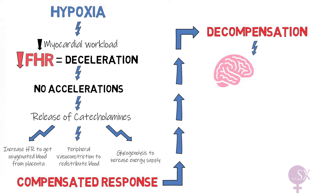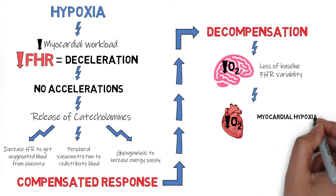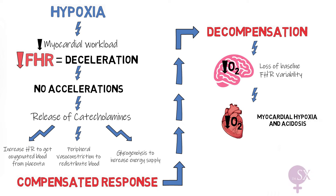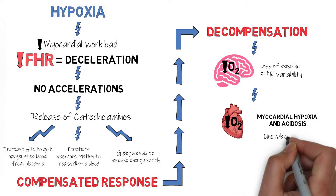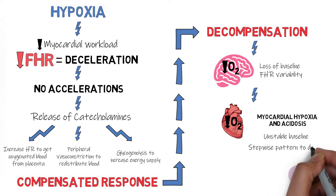First, hypoxia to the brain will result in reduced variability on the CTG. Then we will get myocardial hypoxia and acidosis, which will result in an unstable baseline, and what is described as a stepwise pattern to death. This will, of course, result in an abnormal CTG.